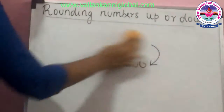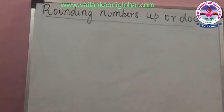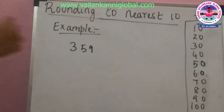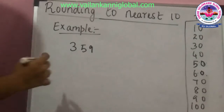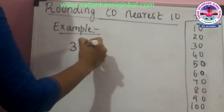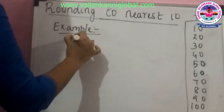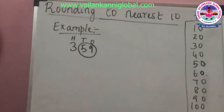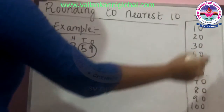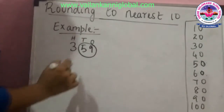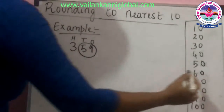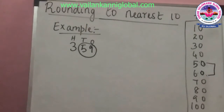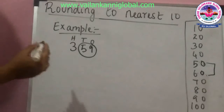First, we will learn how to round numbers to the nearest 10. Take the example 359. You know the place value — the digit 9 is in the 1s place, 5 is in the 10s place, and 3 is in the 100s place. We are rounding to the nearest 10, so we look at 59. We know the tens are 10, 20, 30 and so on up to 100, and 59 lies between 50 and 60.